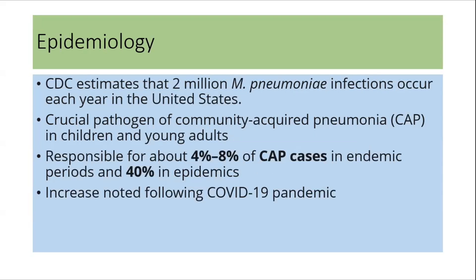Regarding the epidemiology of Mycoplasma pneumoniae, the CDC estimates that around 2 million infections occur each year in the United States. It is a crucial pathogen of community-acquired pneumonia in children and young adults, responsible for about 4 to 8 percent of community-acquired pneumonia cases during endemic periods and 40 percent during epidemics.